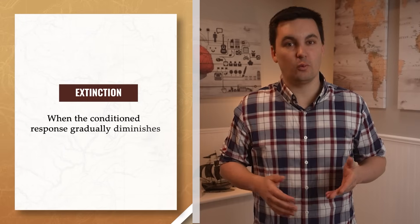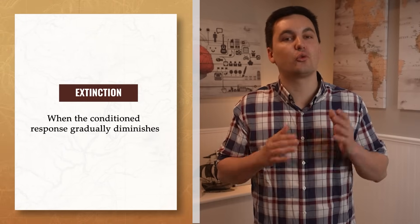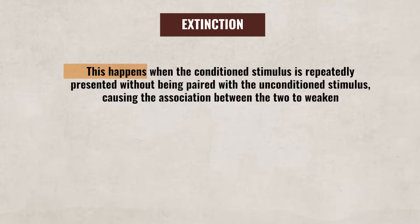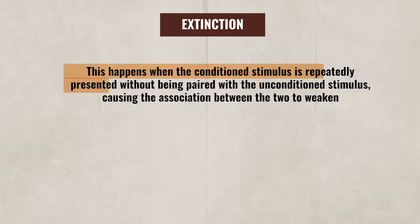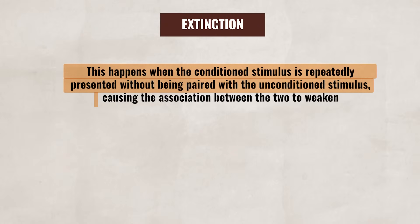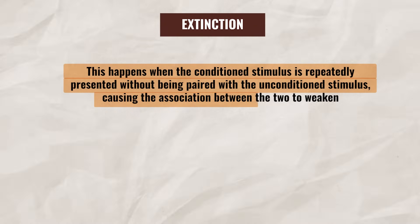Now, when the dog heard the bell, Pavlov noted that the dog started to salivate even before the food was presented. To test these results, Pavlov eventually stopped bringing the food out after he rang the bell. The result was that after the dog heard the bell, the dog would still salivate. Now, if Pavlov continuously rang the bell but did not present the dog food, the dog would start to salivate less and less. This is known as extinction, which is when the conditioned response gradually diminishes. This happens when the conditioned stimulus is repeatedly presented without being paired with the unconditioned stimulus, causing the association between the two to weaken.